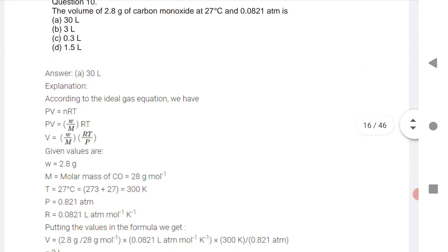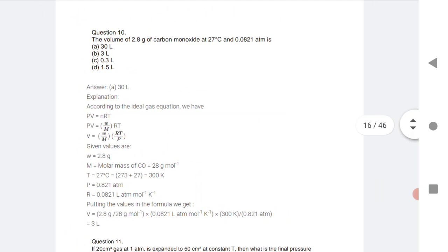Tenth one is a numerical problem, very important numerical problem. The volume of 2.8 grams of carbon monoxide at 27 degrees.